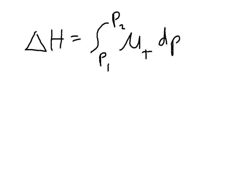And the way to do that is by using mu T. So this is actually a very useful named partial derivative.